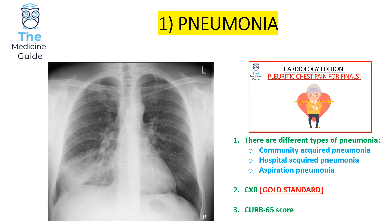This patient has a pneumonia affecting the right lower lobe. A pneumonia affecting the right lower lobe or right lower base is a classical description for potentially an aspiration pneumonia, and that's something you need to keep in mind.